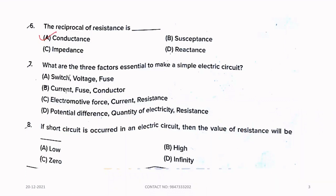Seventh question, what are the three factors essential to make a simple electric circuit? Option C. Eighth, if short circuit is occurred in an electric circuit, then the value of resistance will be option C, 0.